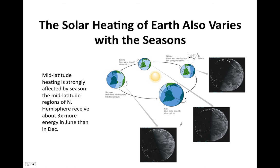Solar heating of Earth also varies with the seasons. In the northern hemisphere it's warmer in summer than in winter — why? Earth's rotational axis is not perpendicular to the plane of the solar system; it's actually tilted by 23.5 degrees. That tilt of the Earth is the cause of seasonality on our planet — why the northern hemisphere is warmer one part of the year and colder another, and vice versa for the southern hemisphere.